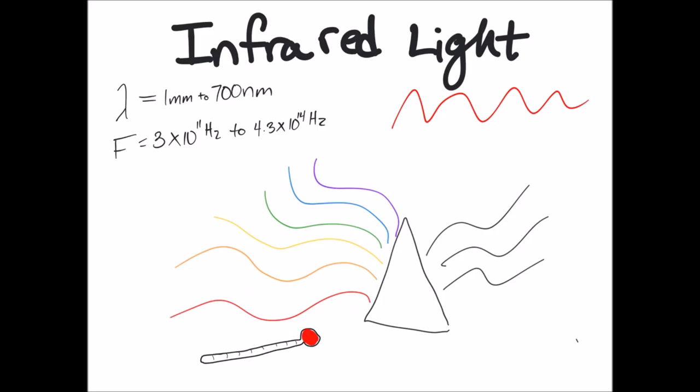Infrared light has a wavelength between 1 millimeter and 700 nanometers. It has a frequency between 3 x 10 to the 11th hertz and 4.3 x 10 to the 14th hertz. Infrared light was discovered in 1800 by William Herschel. He had split white light into its components. Remember Roy G. Biv. William discovered that if he placed a thermometer just beyond the red light, the liquid in the thermometer rose. This told him some kind of energy was there and it was causing the thermometer to heat up. Infra means below. So infrared light is below red light.